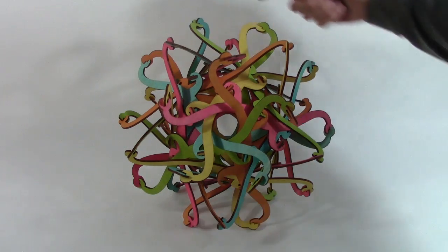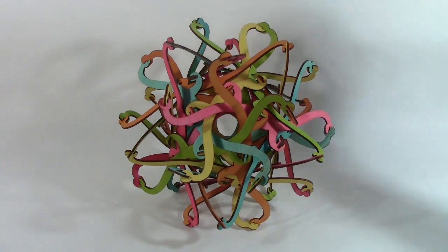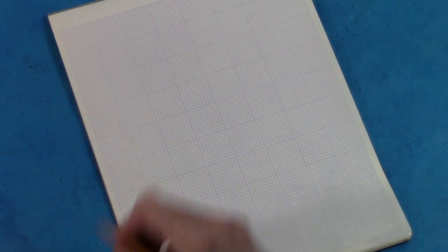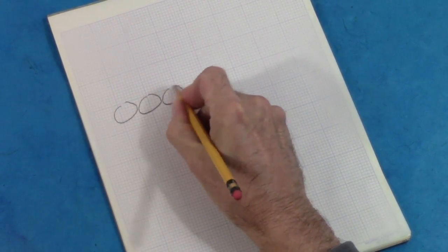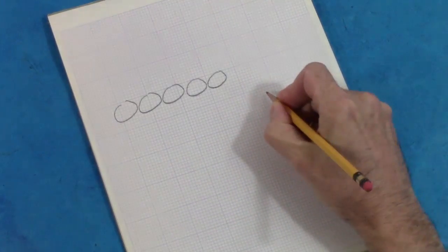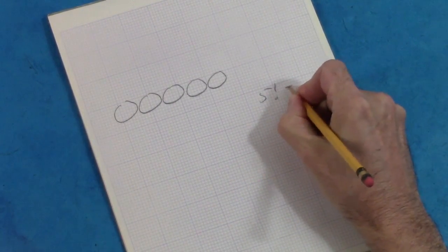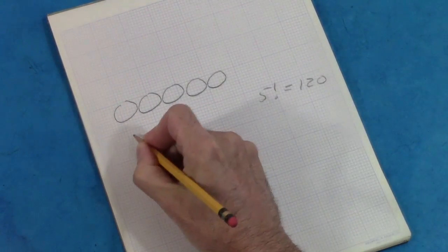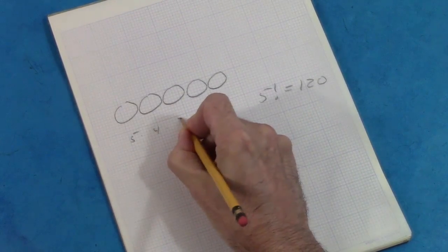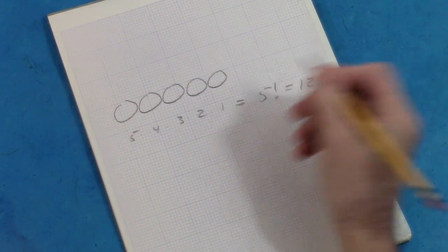There are some interesting ideas here from a branch of mathematics called group theory. First, you may know there are five factorial ways you can order five things in a row. That's 5 times 4 times 3 times 2 times 1, which is 120, because there are five choices for the first slot, after which you have four choices for the second slot, three for the third, two for the fourth, and only one possibility for the last slot.